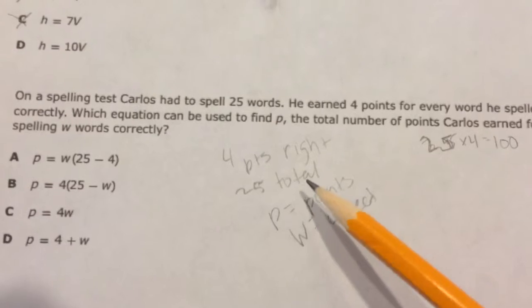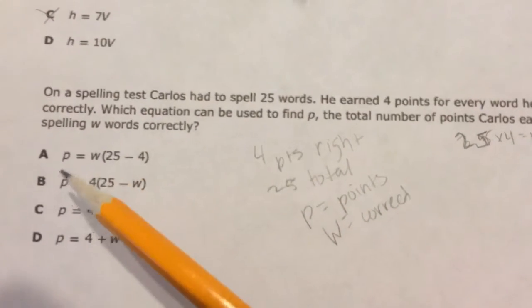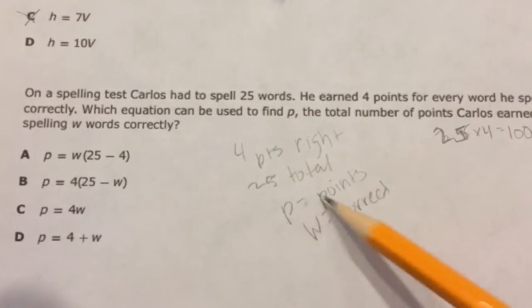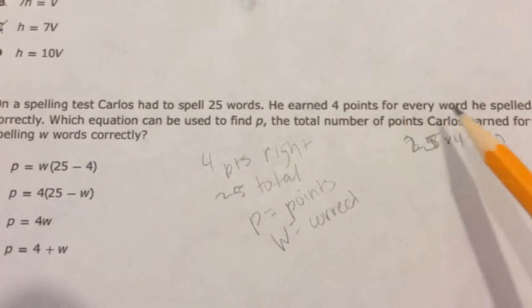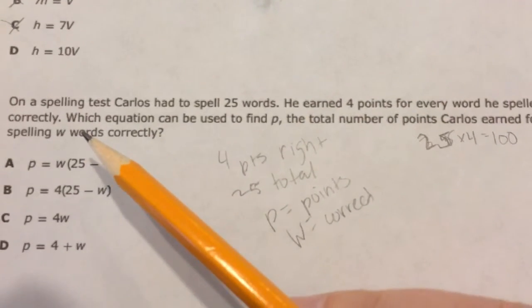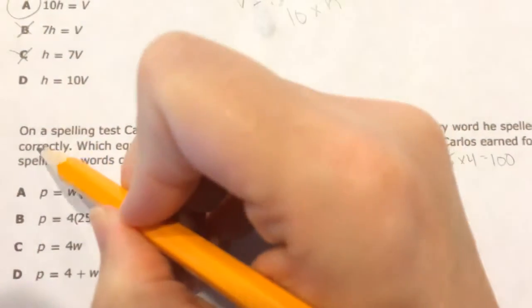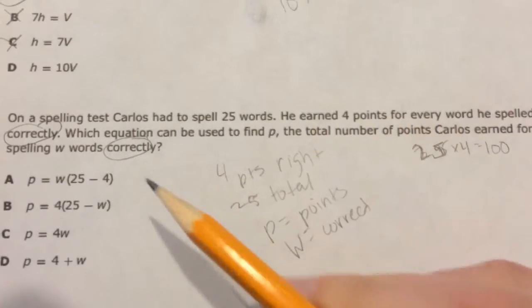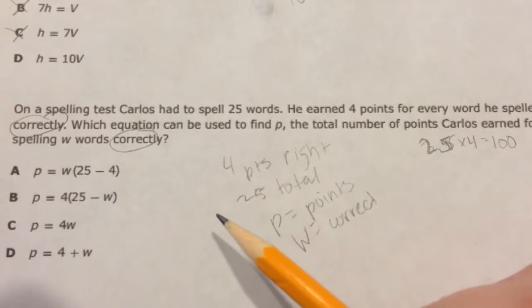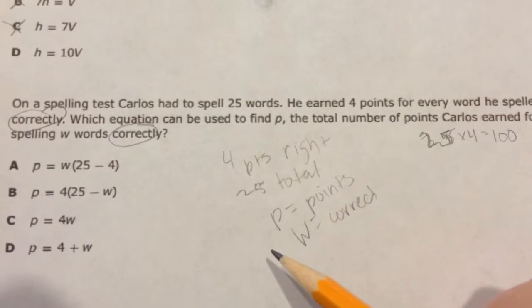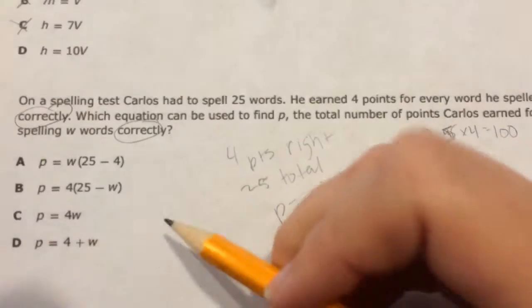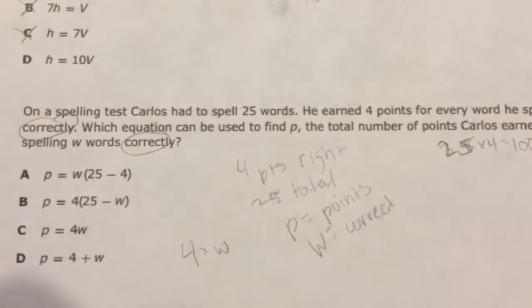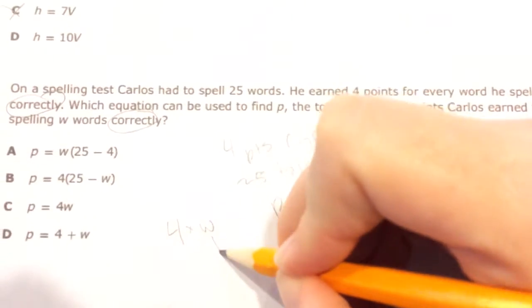Well, let me think about this. Maybe I should look at some of these. Points, correct. I know these have to be related. It says he earns 4 points for every word he spelled correctly, and W is words correctly. I can see, oh, correctly and correctly, those might go together. 4 points for every one he spelled correctly, and W is what he spelled correctly. I kind of feel like I need to multiply those, the 4 times the W, because he gets 4 points for every question he gets right, and this stands for what he gets right.